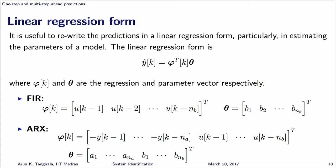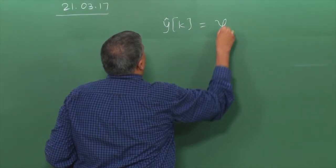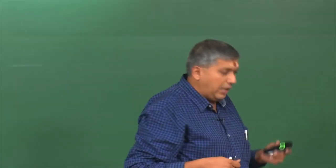We have looked at how to express a prediction in transfer function form, in difference equation form, and now we are looking at how to express a prediction in linear regression form. Transfer function form is for compactness, difference equation form is for implementation and understanding, and linear regression form is for estimating the parameters. For FIR and ARCS model structures, the predictions can be expressed in a standard linear regression form as a linear combination of some regressors.